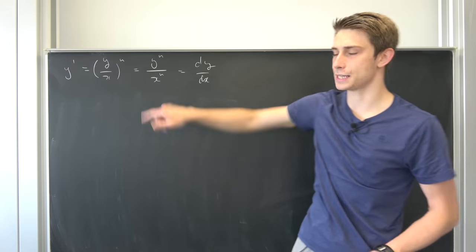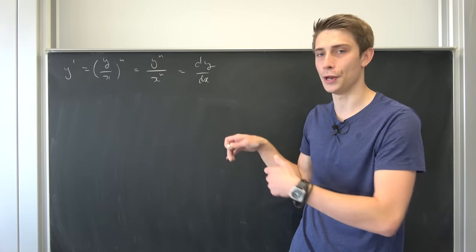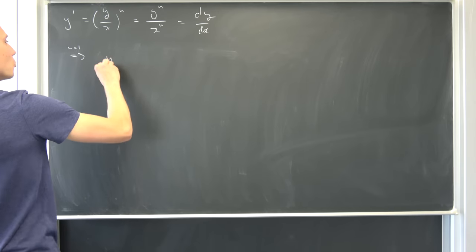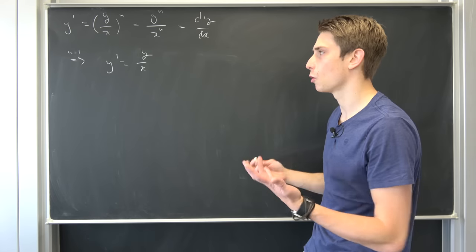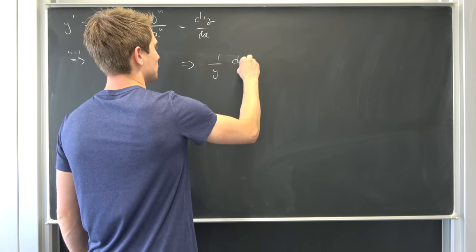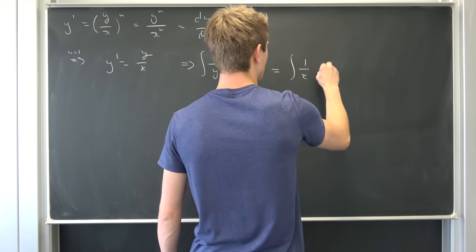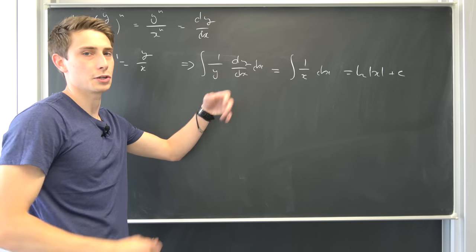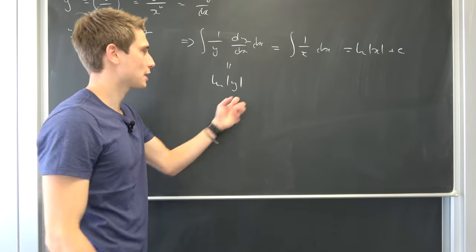Now we consider the special case when n equals 1, because we saw before that we would run into problems using n equals 1 in our derived formulas. Setting n equal to 1, y prime equals y over x. Using the easy technique, we divide both sides by y to get (1 over y) dy/dx equal to 1 over x, and then integrate both sides with respect to x. The left side gives the natural log of |y| and the right side gives the natural log of |x| plus an arbitrary constant c.